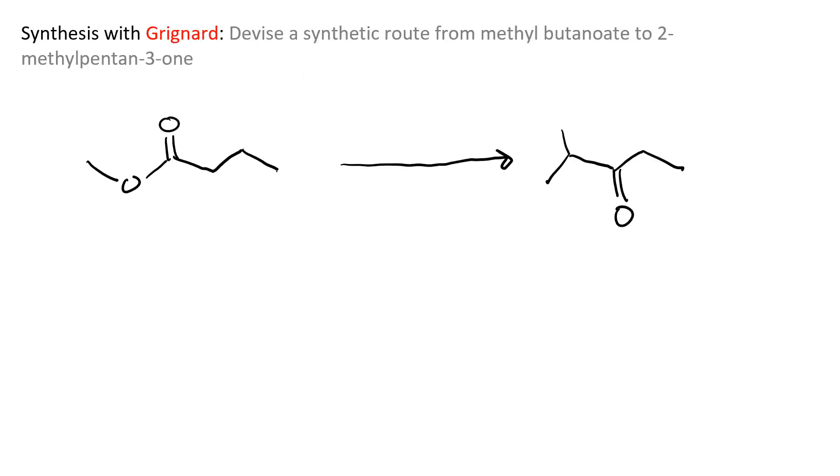Of course, you should always draw your structures. Over here, our parent chain is pentane-3-one, and there is a methyl group on carbon-2. That is our product, the 2-methylpentane-3-one. And this is our starting material, methyl butanoate, the ester.